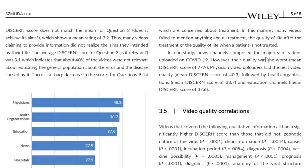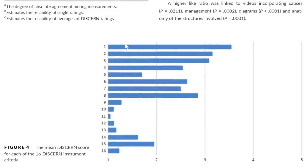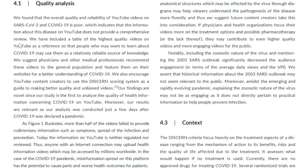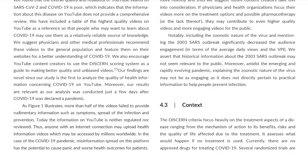In their study, news channels comprised the majority of videos uploaded on COVID-19; however, their quality was the worst, with a mean DISCERN score of 27.9. Generally, question one was the best answered, followed by question two, and from there things declined very quickly. The authors found that overall the quality and reliability of YouTube videos on SARS-CoV-2 and COVID-19 is poor, indicating that the information on YouTube does not provide a comprehensive review. Their analysis was considered valid because it was conducted just days after COVID-19 was declared a world pandemic.